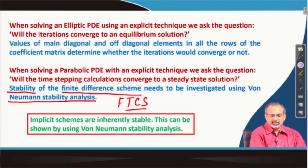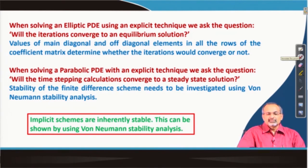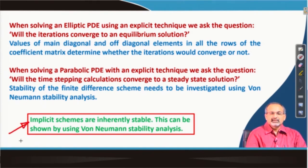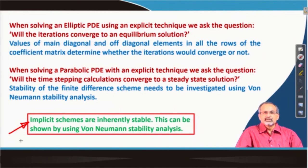We learn about the von Neumann stability analysis. One thing to emphasize is that explicit techniques are vulnerable to stability issues. Implicit schemes in general are inherently stable, and in fact this can also be shown through the von Neumann stability analysis. Explicit schemes are troubled with the stability issue, and therefore whenever we are handling explicit schemes we need to be very careful, especially when marching the solution in time, to do a stability analysis and ensure that the scheme will actually work.